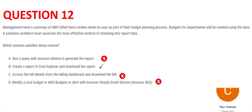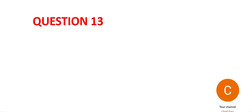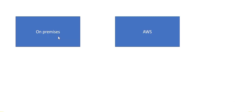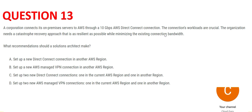Question 13 — please pause and read it carefully. The on-premises network has to be connected to AWS through a 10 Gbps Direct Connect. The question says we need a catastrophic recovery approach — if this connection goes down, how do we recover it while minimizing the impact on existing connection bandwidth? There are four options and you must select one.